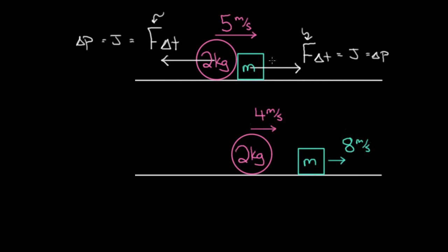You might think, wait, this isn't conserved. The pink ball only lost one, five to four, but the green cube gained eight. But remember, we're not conserving velocity, we're conserving momentum.